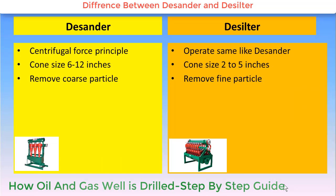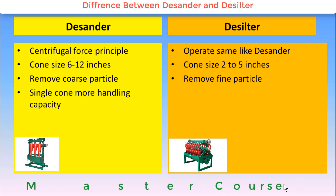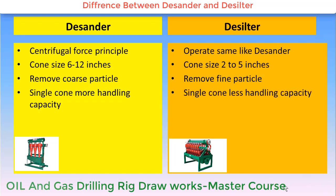In desander, a single cone will have more drilling fluid handling capacity, whereas in desilter, a single cone will have less handling capacity of the drilling fluid, because desilter has a smaller cone diameter and desander has a larger cone diameter, so their capability to handle the drilling fluid will be different.